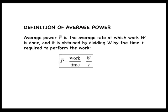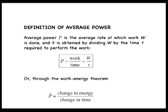Through the work energy theorem, we can also define the power as the rate of change in energy, or p average equals the change in energy divided by the change in time, or delta E divided by delta t. Note that since work, energy, and time are all scalars, power is a scalar quantity.